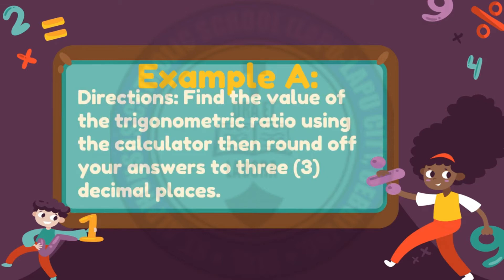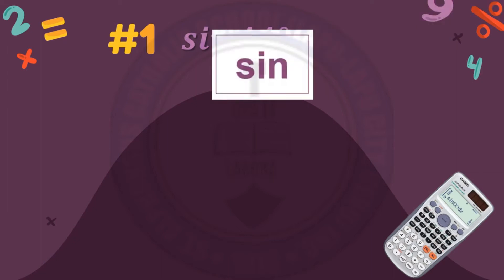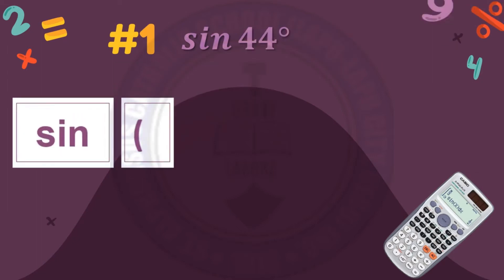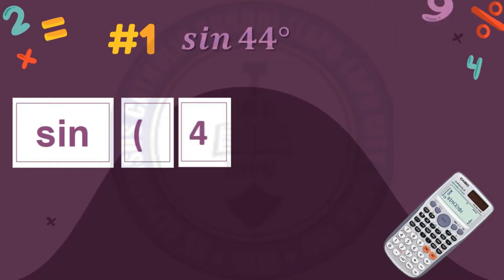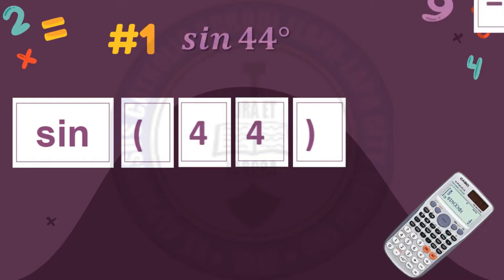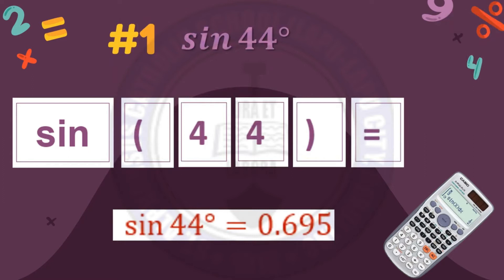Directions: Find the value of the trigonometric ratio using the calculator, then round off your answers to three decimal places. For number 1, sine 44 degrees: click sine, followed by the open parenthesis, followed by 44, then close parenthesis, then equal. With that, sine 44 degrees is equal to 0.695.